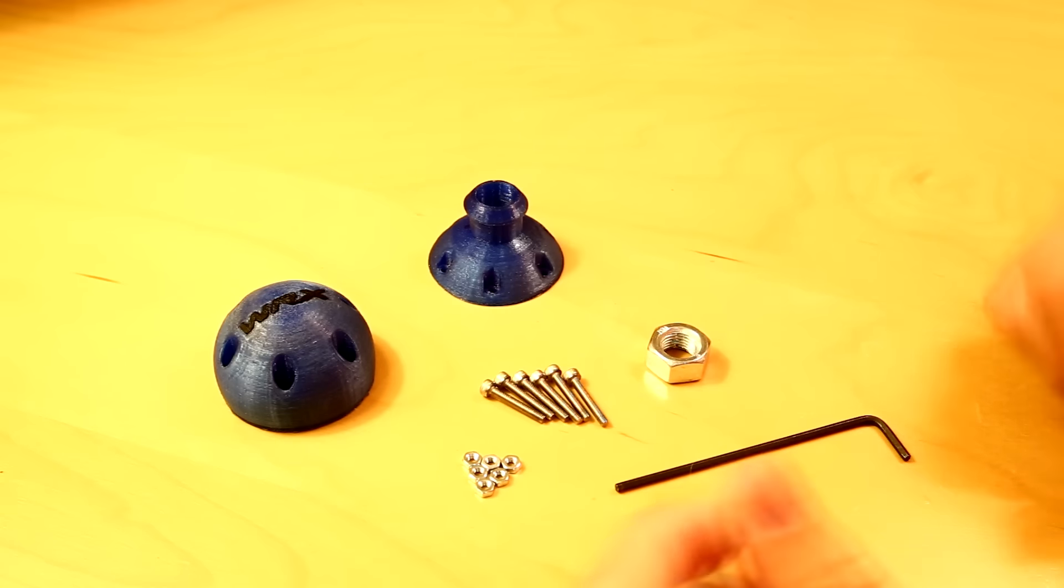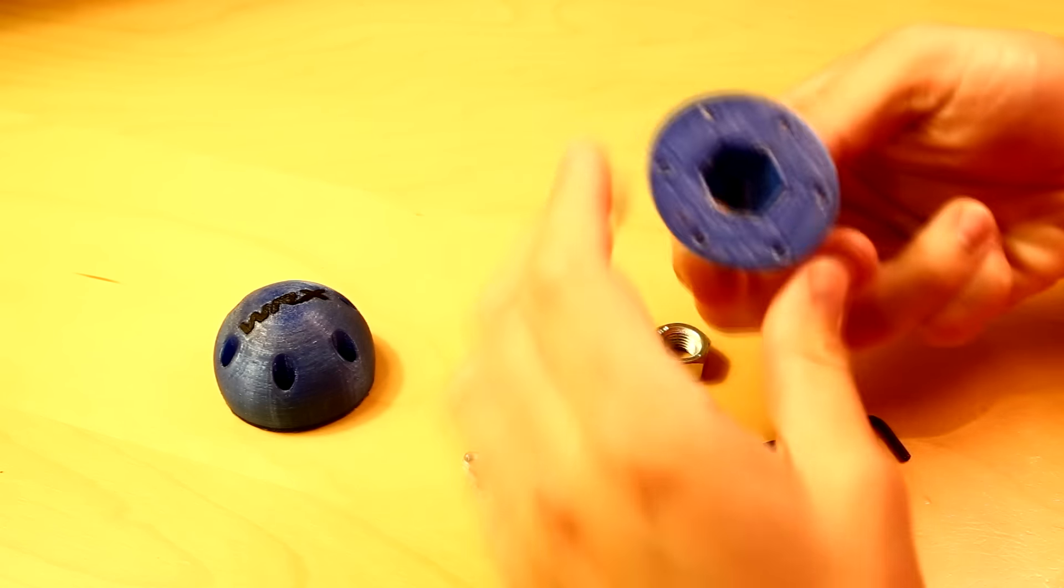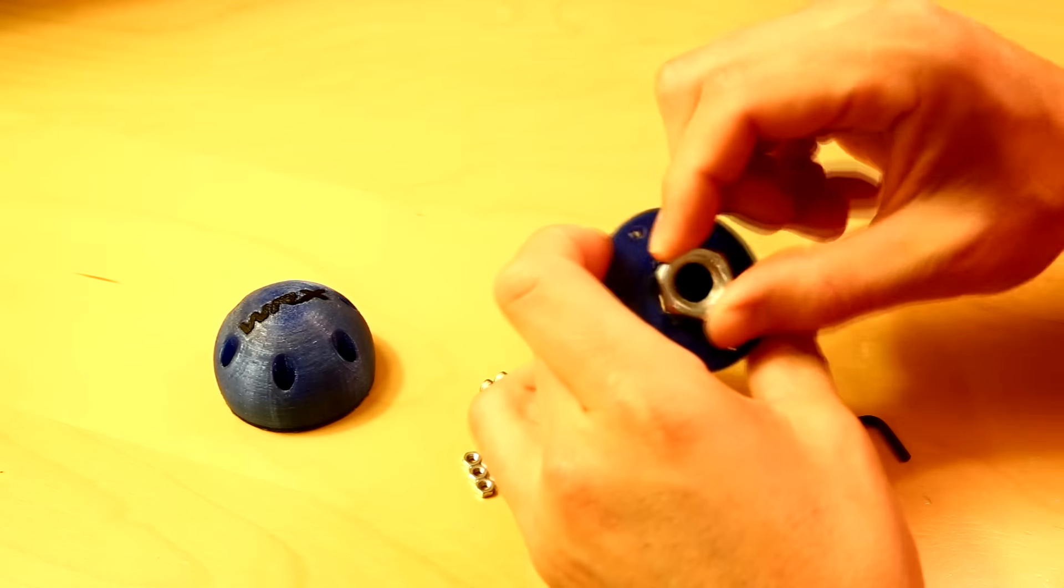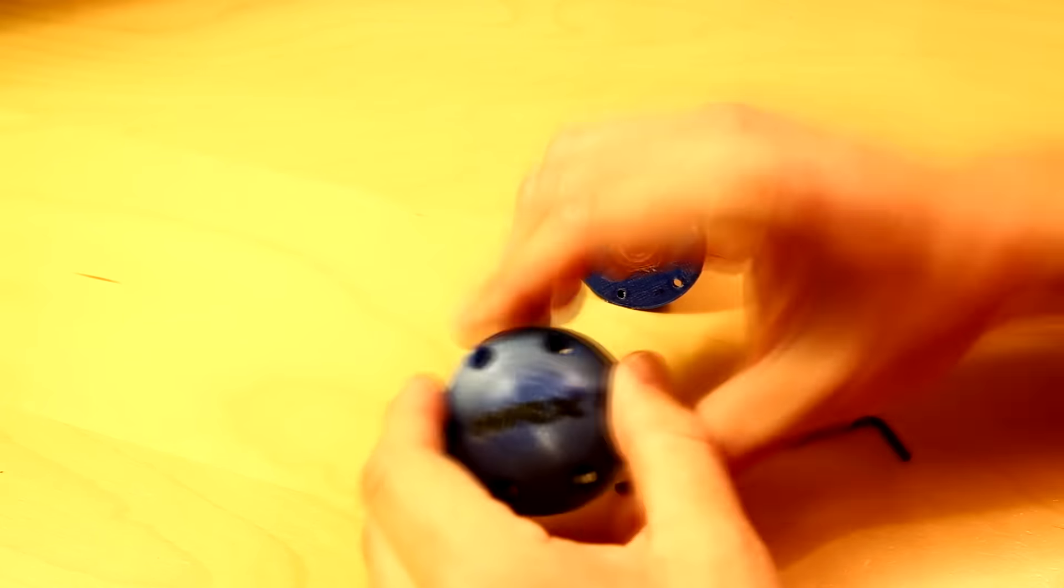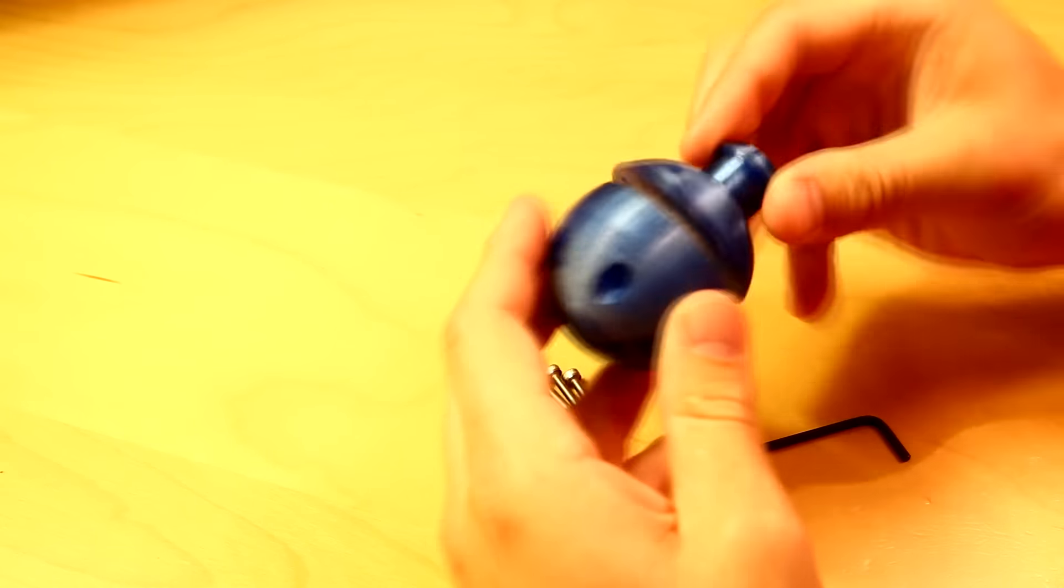I already inserted the black WRX letters into the top half of the knob. So now I just need to insert the M12 nut into the bottom half. After that, it is time to place both halves together.